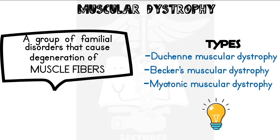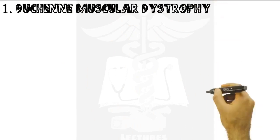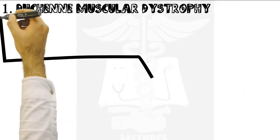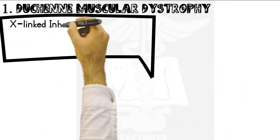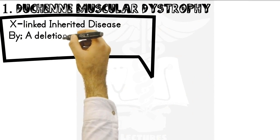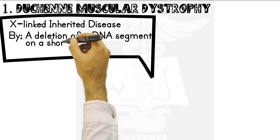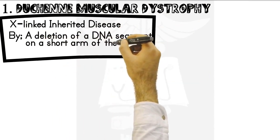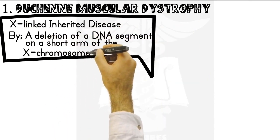Let's begin with Duchenne muscular dystrophy. Duchenne muscular dystrophy is an X-linked inherited disease, and it's caused by a deletion of a DNA segment or single gene defect on the short arm of the X chromosome.